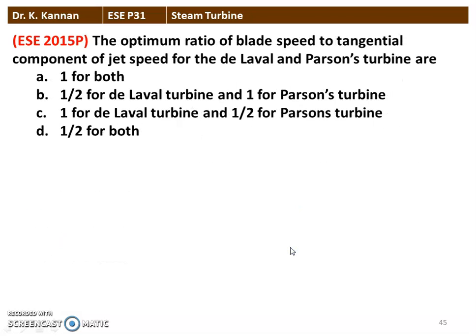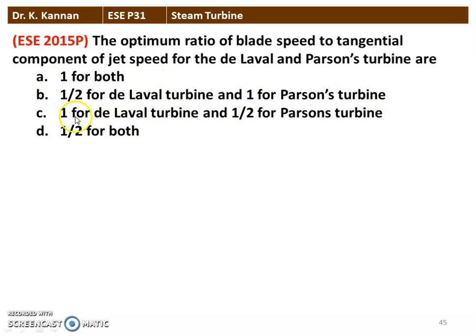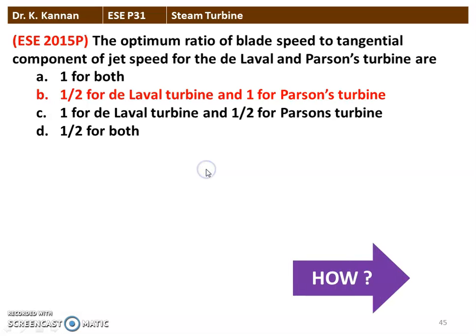Next question from the 2015 question paper — the optimum ratio of blade speed to the tangential component of the jet speed. Blade speed is V_B and tangential component is V_W1. Options: 1 for both; 1/2 for De Laval turbine and 1 for Parsons turbine; 1 for De Laval turbine and 1/2 for Parsons turbine; or 1/2 for both. The correct answer is 1/2 for the De Laval turbine and 1 for the Parsons turbine.